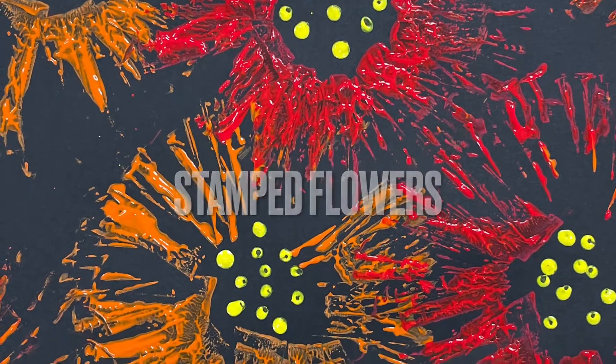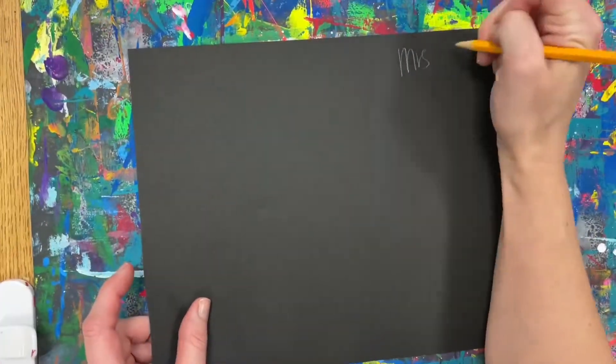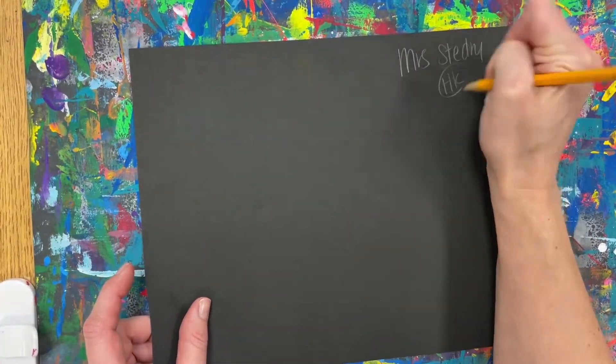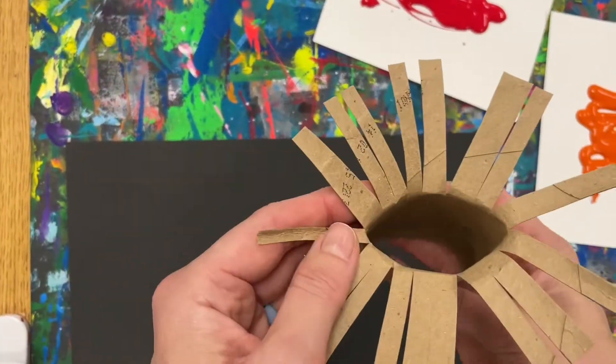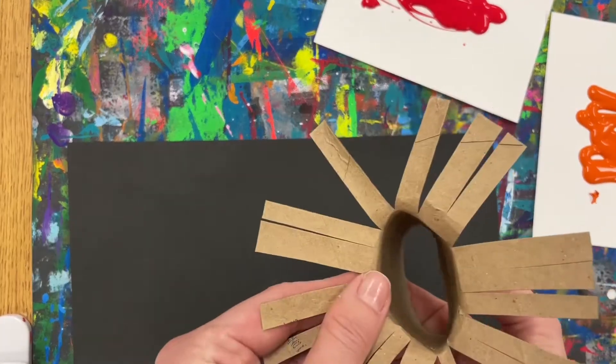Directions for your stamped flowers. Remember your name and teacher code. You're going to use a paper towel roll that is cut to stamp your flowers.